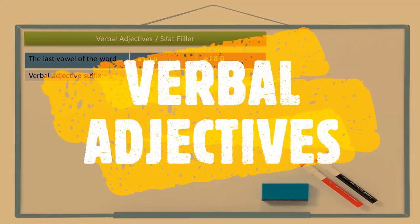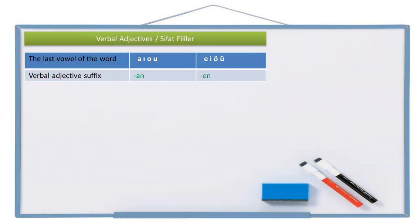Hello friends, merhaba arkadaşlar. In this lesson, we are going to learn the verbal adjectives — sıfat fiiller. Adjective is sıfat and verb is fiil. We will simply add the verbal adjective suffixes to the verbs to make them verbal adjectives for the nouns. The first verbal adjective suffix we are going to learn is -an or -en, which alternates according to two-way vowel harmony.